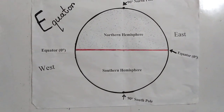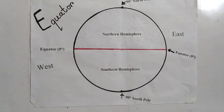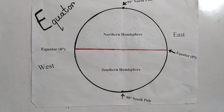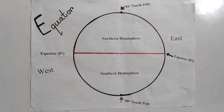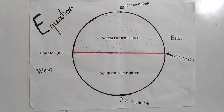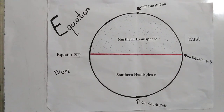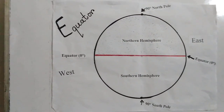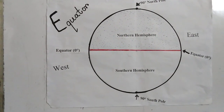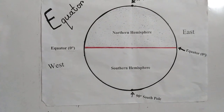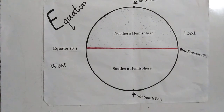Dear students, look at the figure. The northern part of the Earth is called the northern hemisphere. It is located to the north side of the equator, to the upper side of the equator. While to the lower side of the equator, it is the southern hemisphere. In the figure, the red colored horizontal line is the equator. It is a full circle and runs from west to east.